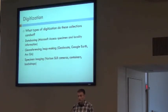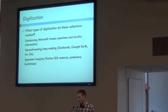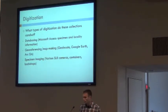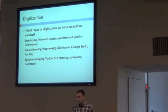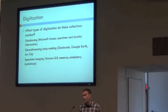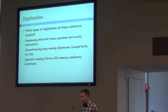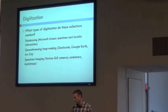Consistently, each collection uses a Microsoft Access database, although we are soon to be clients of Symbiota and Specify. We use that to track our specimen and locality information. For geo-referencing, these groups use GEOLocate and Google Earth to determine the locality coordinates, and usually ArcGIS to put points on maps for publication. The collections use specimen imaging with various SLR cameras and containers, with various backdrops.